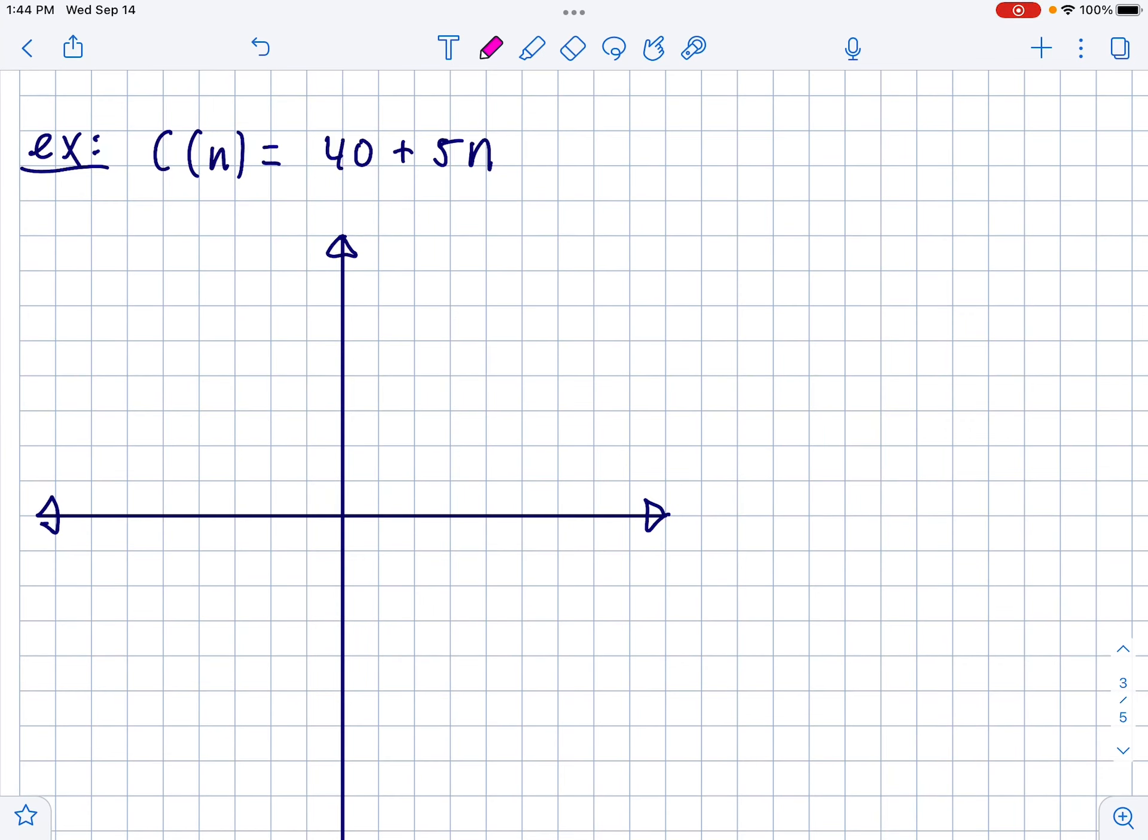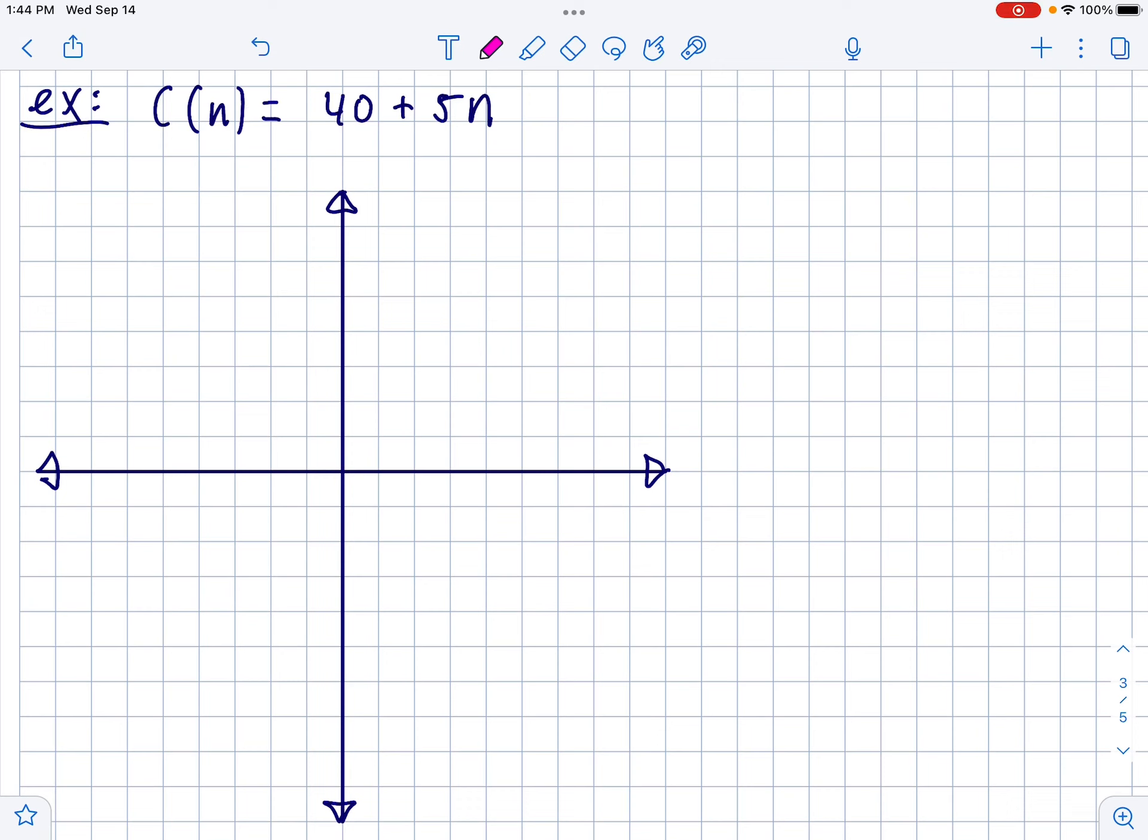Next up, they're not using y's and x's. They're using n and c of n. Well, if that's confusing to you, the input is always the horizontal axis. So I'm going to label this one n and this one c of n. So these are inputs. And these are outputs. Now, you might look at this function right here, this equation, and say, well, it's not in y equals mx plus b form. You can always rearrange that. You can always say that this is the same thing as 5n plus 40. And then your slope equals 5 over 1 and your y-intercept is 0, 40.